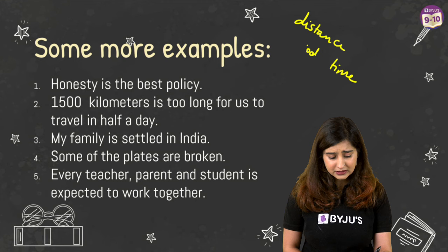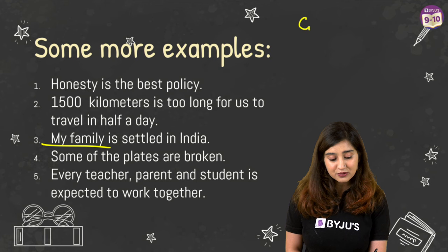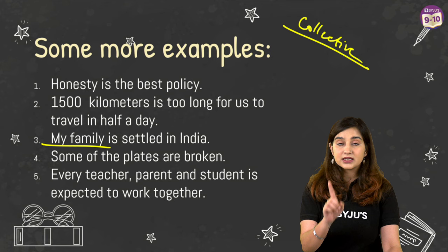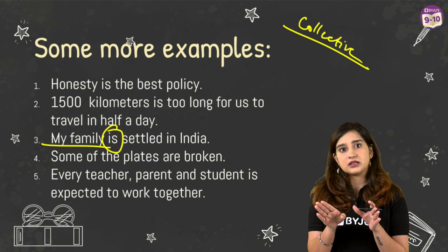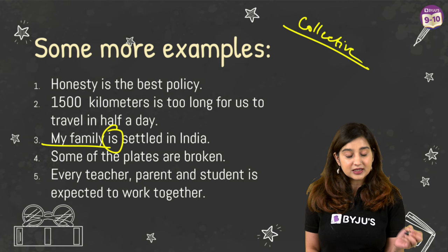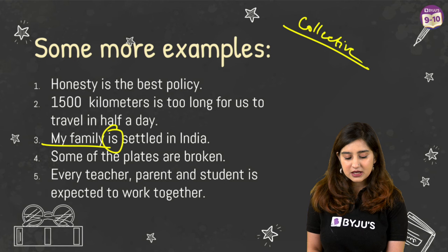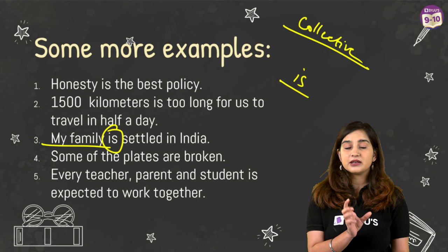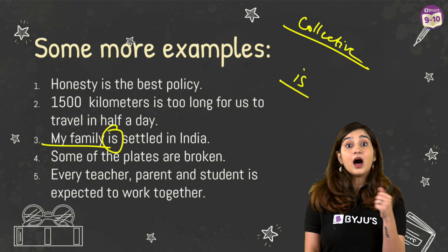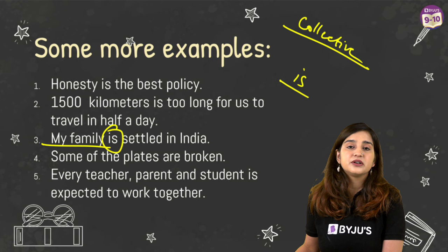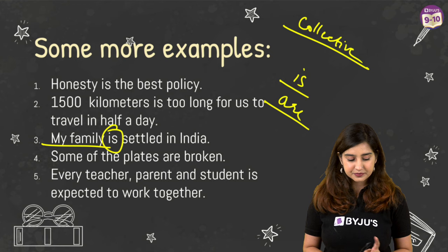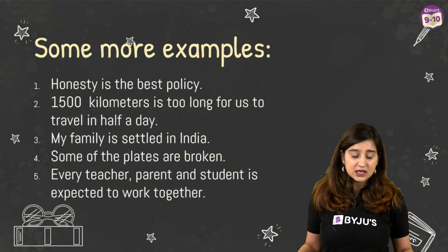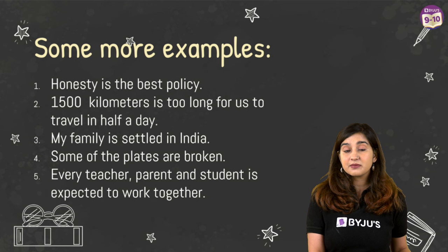'My family is settled in India.' 'My family' here is a collective noun. For collective nouns, just remember: if the collective noun is being used as a single unit — everyone doing the same thing — use a singular verb. 'The couple is eating dinner at that restaurant' — they are doing the same thing, so 'is.' But if the members of the collective noun are doing different things, you can use a plural verb: 'The couple are taking different vehicles to work' — they are doing separate things, so 'are.'